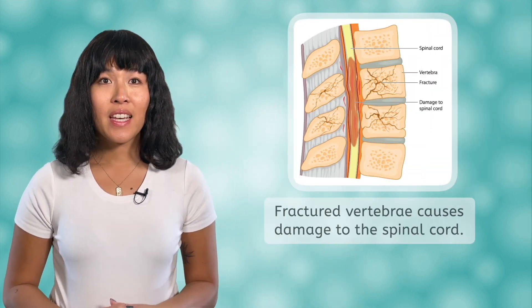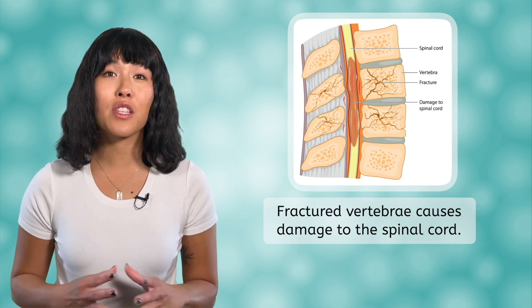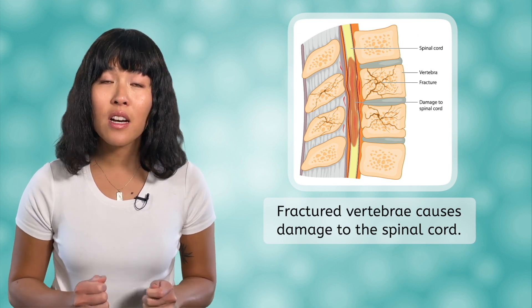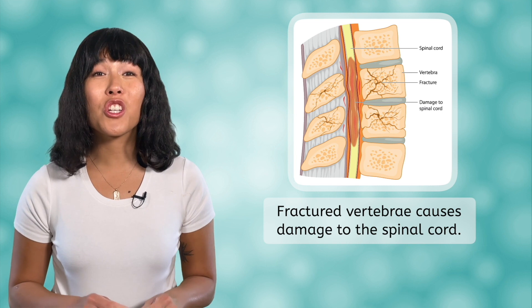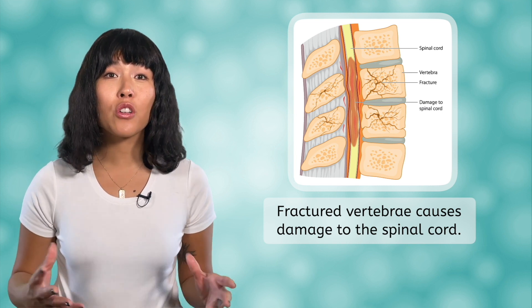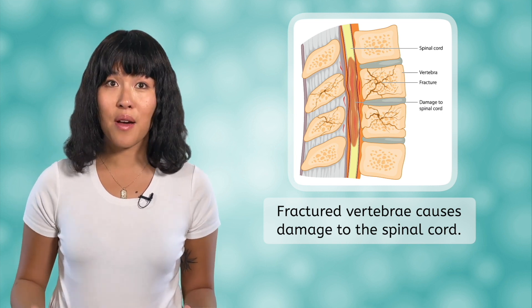Other disorders of the nervous system can be caused by injury and trauma. An example could be a concussion, which affects the brain, or a spinal cord trauma. In a spinal cord trauma, the neural tissues of the spinal cord are compressed, pulled, or sheared, affecting the motor neuron functions of the peripheral nervous system.